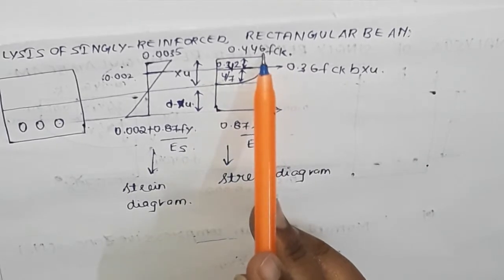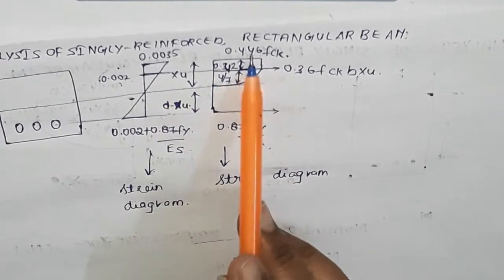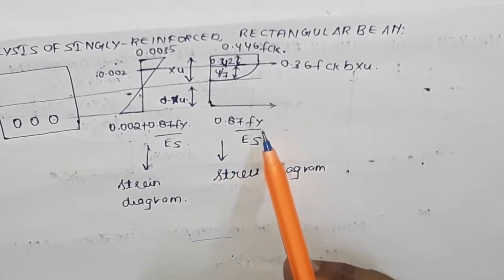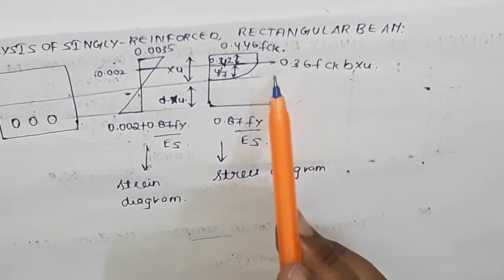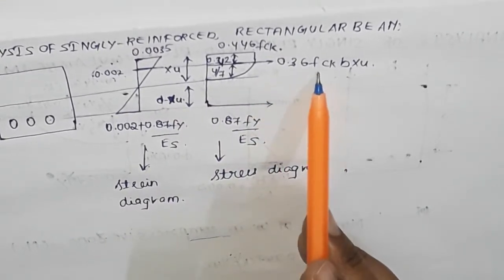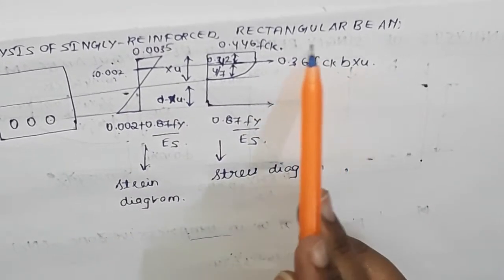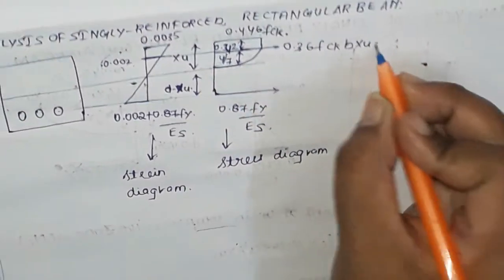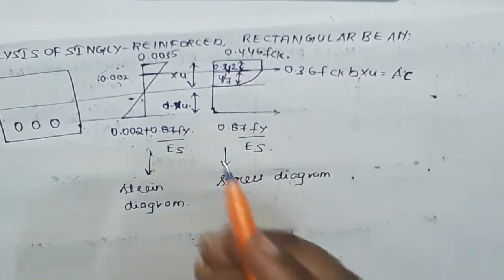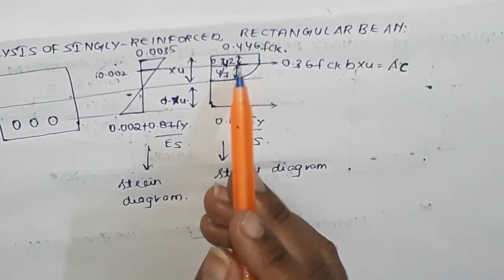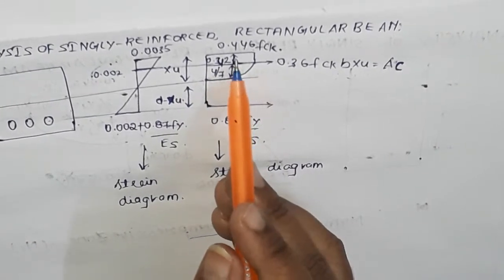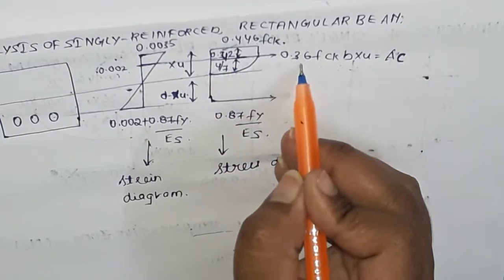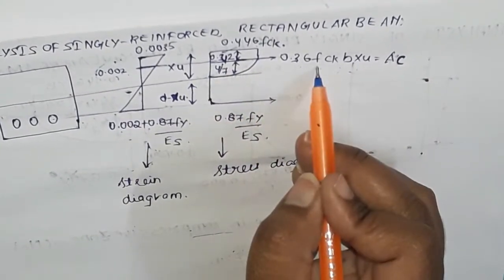The maximum stress in concrete is 0.446 FCK, as we have discussed in the previous class. The maximum stress in steel is given by AS per IS code as 0.36 FCK × B × XU. This is the area of the compressive block, and the resultant compressive force acts at a distance of 0.42 XU. Both 0.42 XU and the area of the block can be found in the code book.